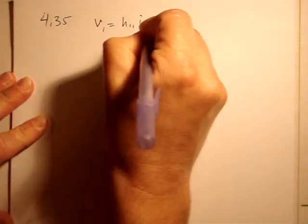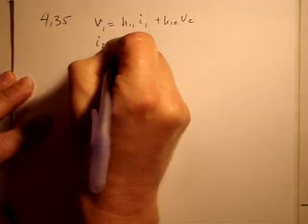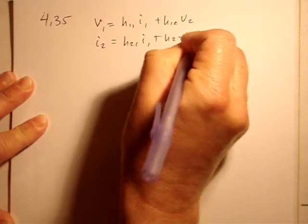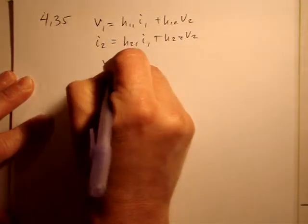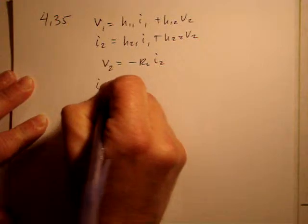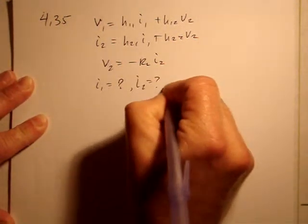V1 and I2 and then also the equation that V2 is negative RL I2. And it says they want to know what is I1, I2, and V2.